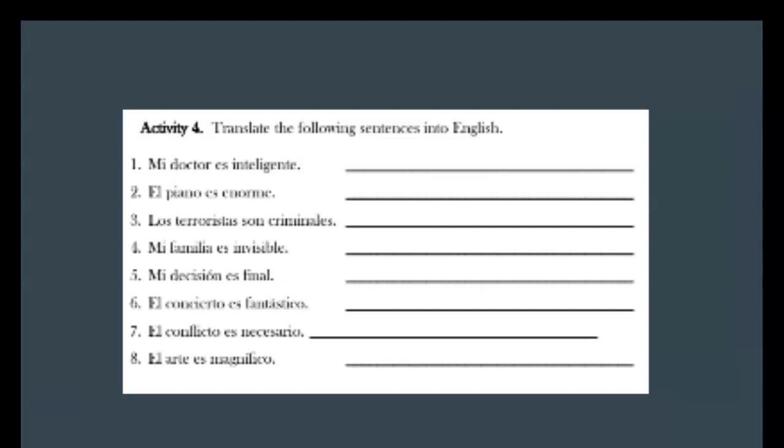Activity four is to translate the following sentences into English. So you're going to just write what they are. I'm going to say them because the more you hear the better you kind of hear things. You know it wasn't until I studied abroad in Spain that I felt like I could hear and understand better. So mi doctor es inteligente. Two, el piano es enorme. Three, los terroristas son criminales. Four, mi familia es invisible. Five, mi decisión es final. Six, el concierto es fantástico.